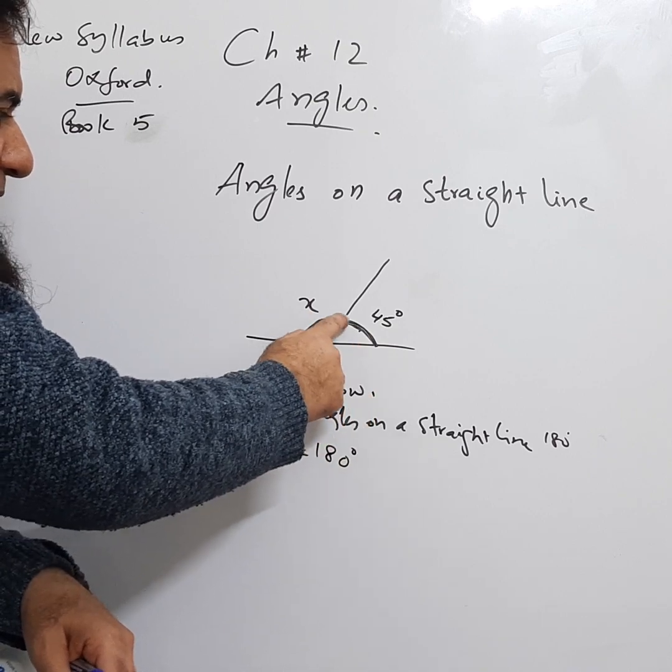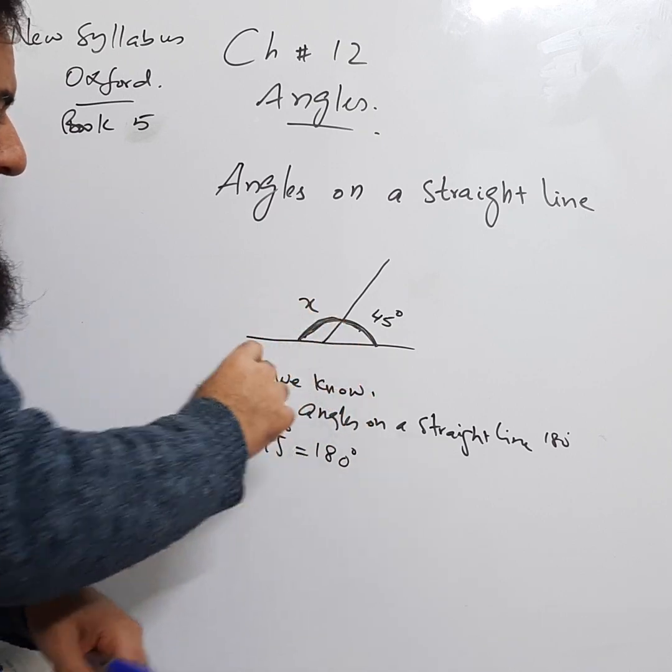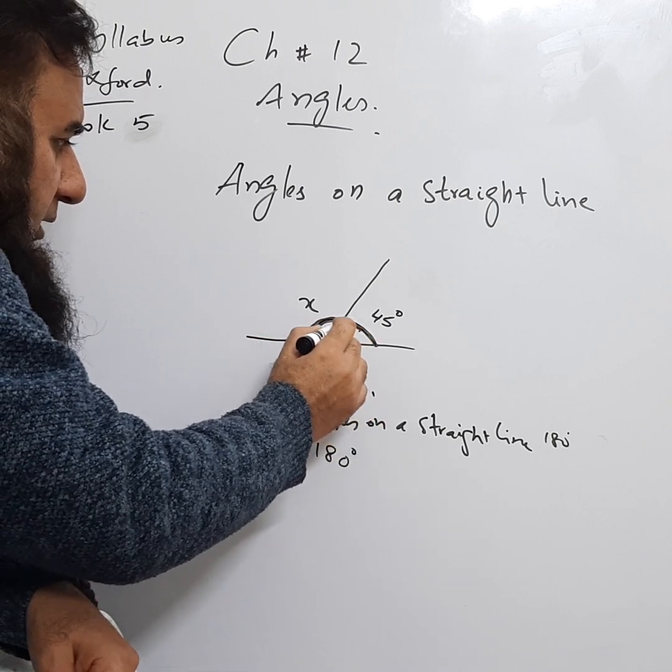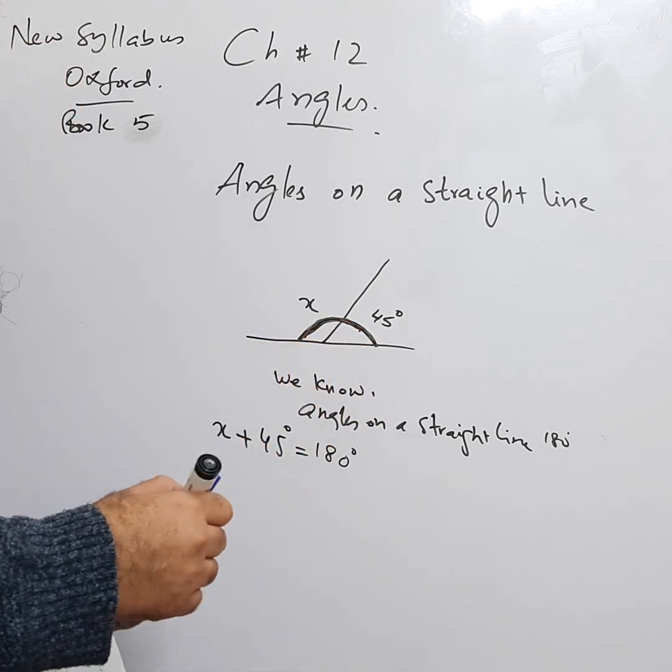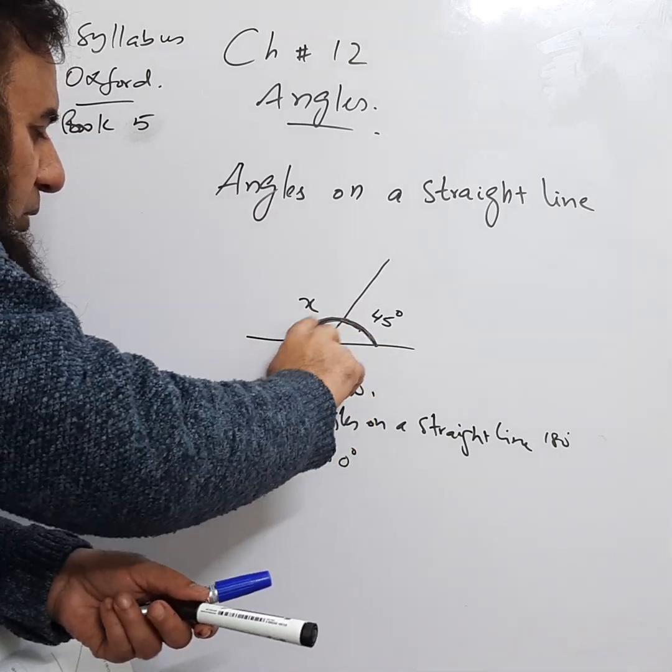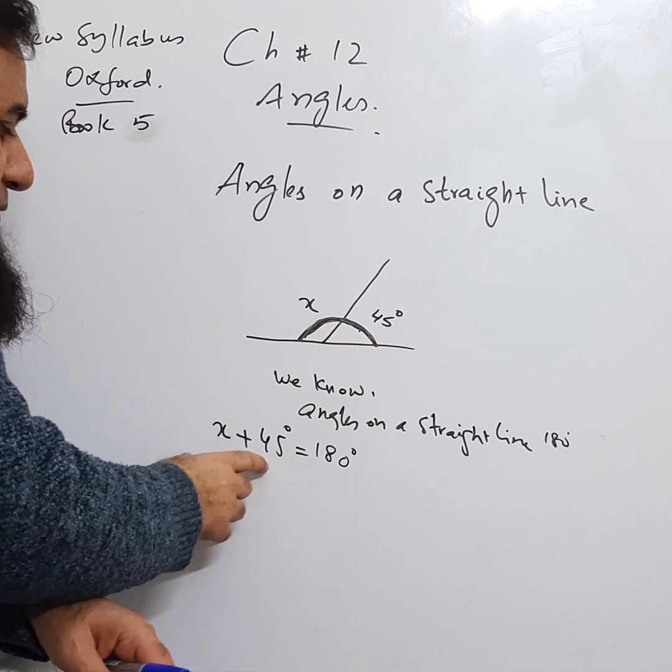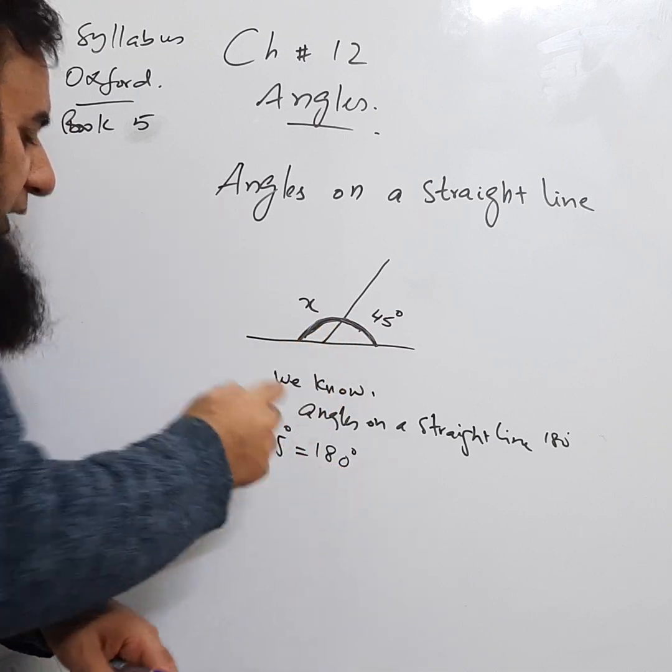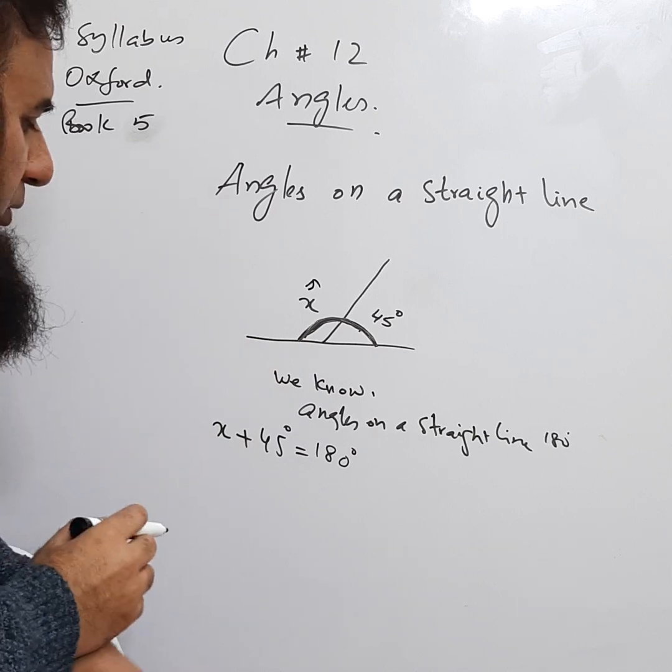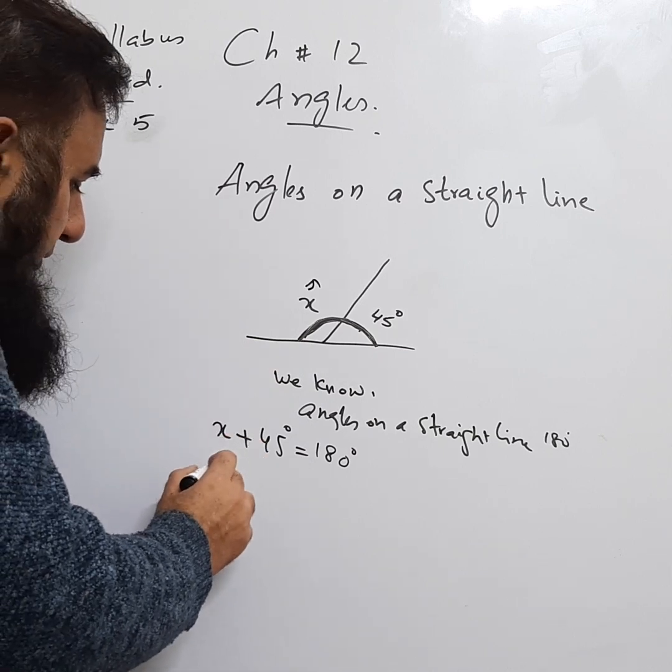So we will say X plus 45 equals 180. This part is 45 and this part is X. We don't know what this part is, but we know that this semicircle always makes an angle of 180 degrees, so X plus 45 equals 180, and we need to find X.